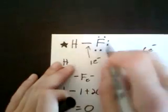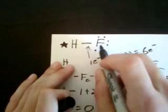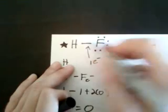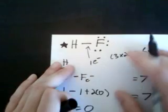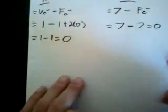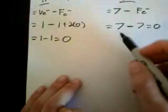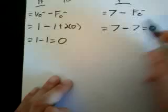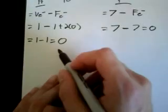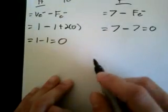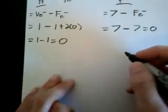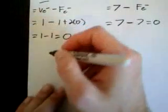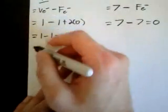Notice that this bond structure does not have any charge associated with it — no negative or plus sign — which makes sense because the sum of the formal charges is always equal to the net charge. So zero plus zero gives a net charge on HF of zero.